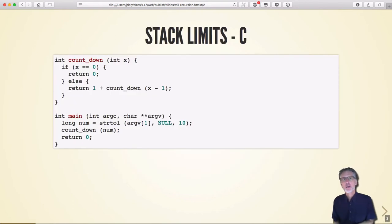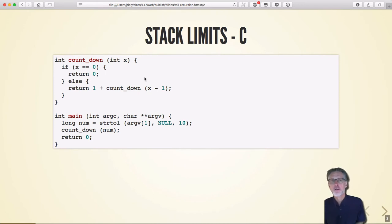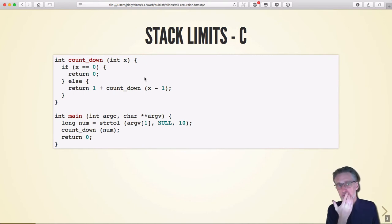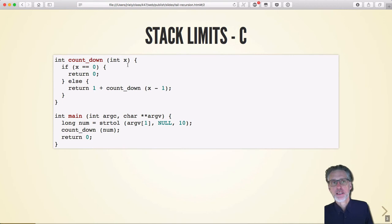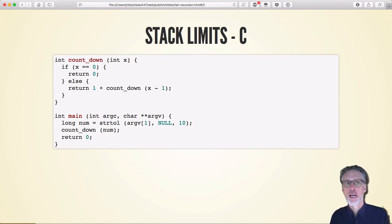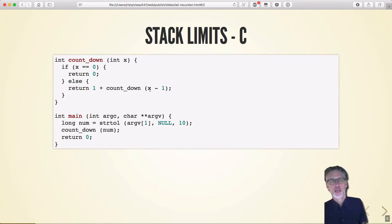Here's a simple recursive function that just counts down — it doesn't really do anything interesting. It essentially returns its result, so if you give it X it returns X, just slowly, in linear time. For each invocation: if X is 0, return 0; otherwise return 1 plus countdown of X minus 1. So countdown of 15 gives 1 plus countdown of 14, which gives 1 plus 1 plus countdown of 13, and so on.